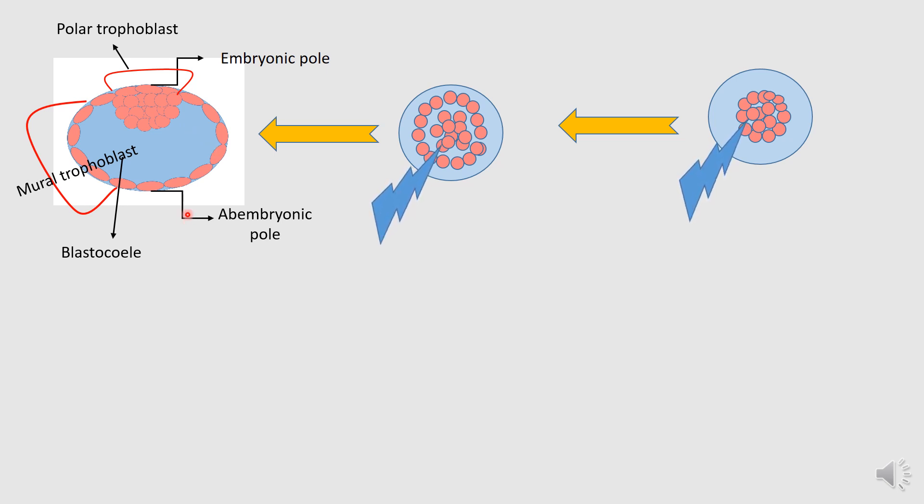So, this stage of cleavage is called the blastocyst. Is it clear? Now, we need to know what happens to this blastocyst, isn't it?